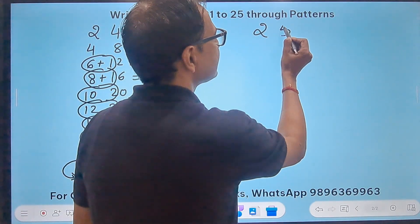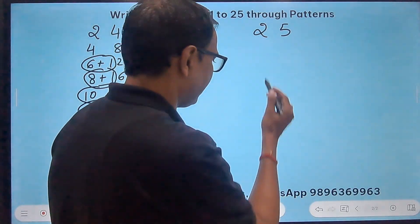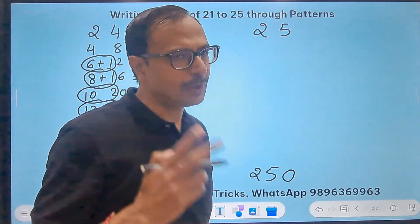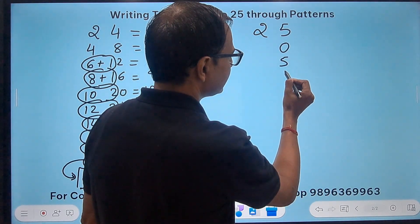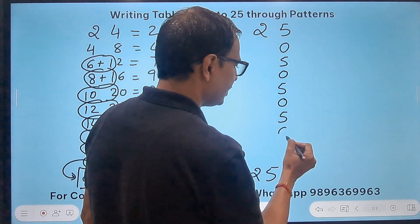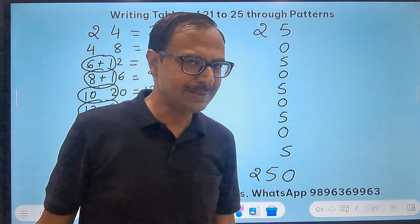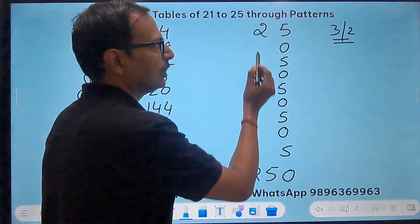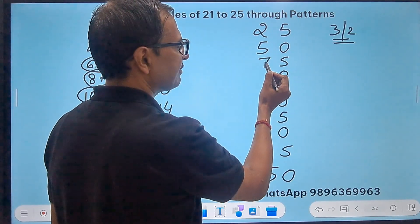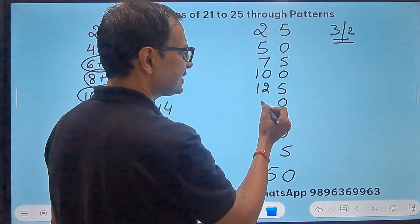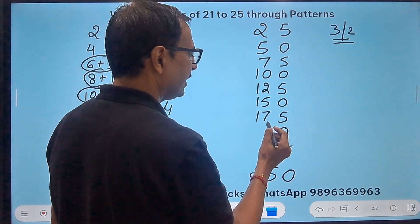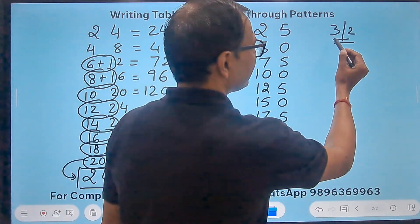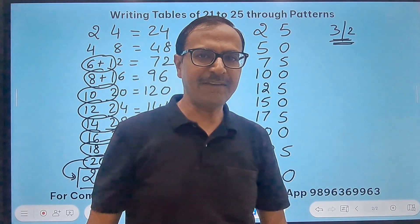Finally, the table of 25, going up to 250. The unit digit follows only two values alternating: 5, 0, 5, 0, 5, 0, 5, 0, 5, 0. For the tens digit, take a gap alternating between 3 and 2: 2 plus 3 is 5, plus 2 is 7, plus 3 is 10, plus 2 is 12, plus 3 is 15, plus 2 is 17, plus 3 is 20, plus 2 is 22, plus 3 is 25. So the unit digit alternates between 5 and 0, and the tens digit increases with gaps of 3 and 2.